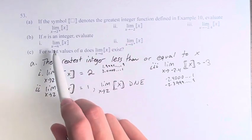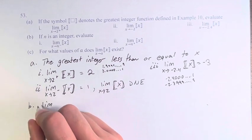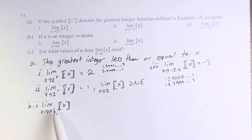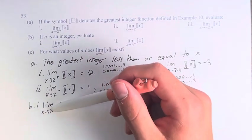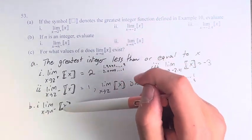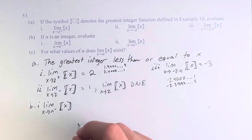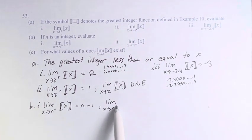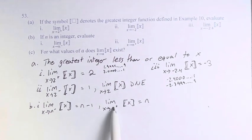If n is an integer, we're asked to evaluate the limit as x approaches n from the left and from the right. From the left, these are values slightly less than n — not quite at the value of n — so the greatest integer less than or equal to them is 1 less than n. Meanwhile, if we're approaching n from the right, these are values greater than n, and therefore the greatest integer less than or equal to these values is n.